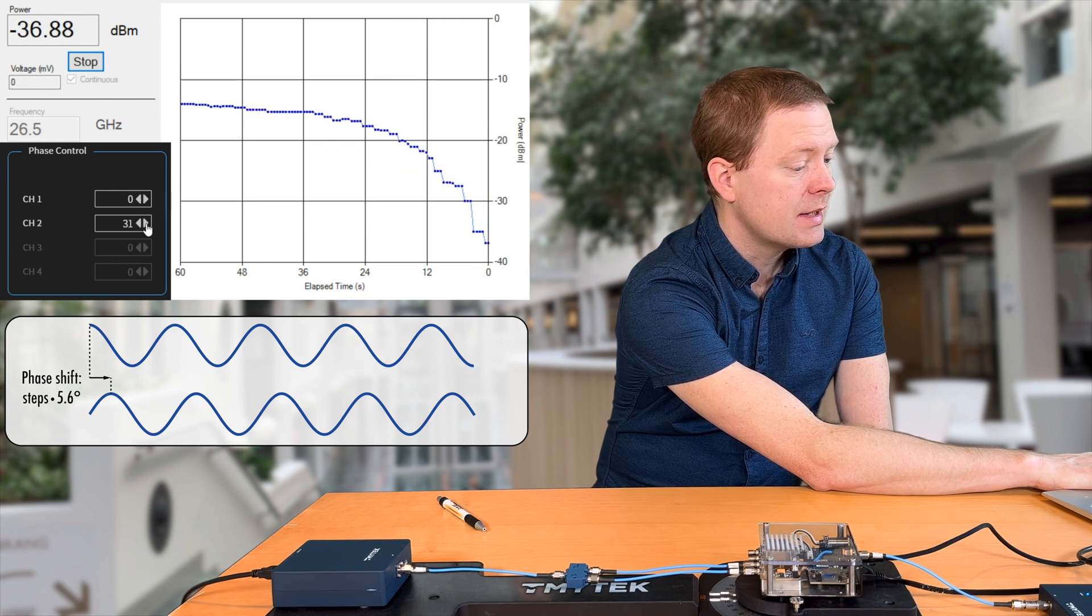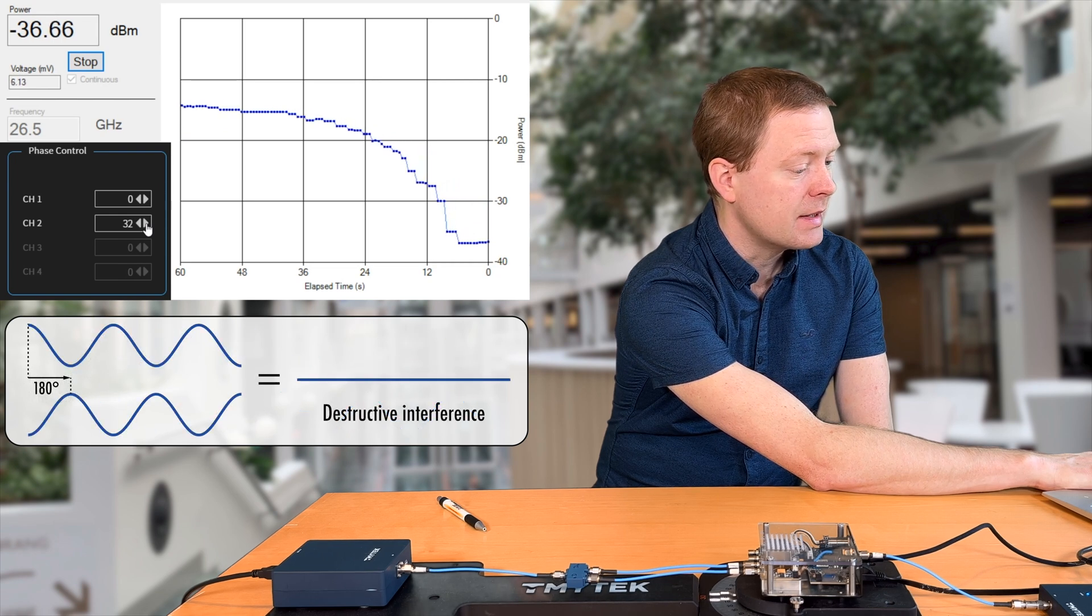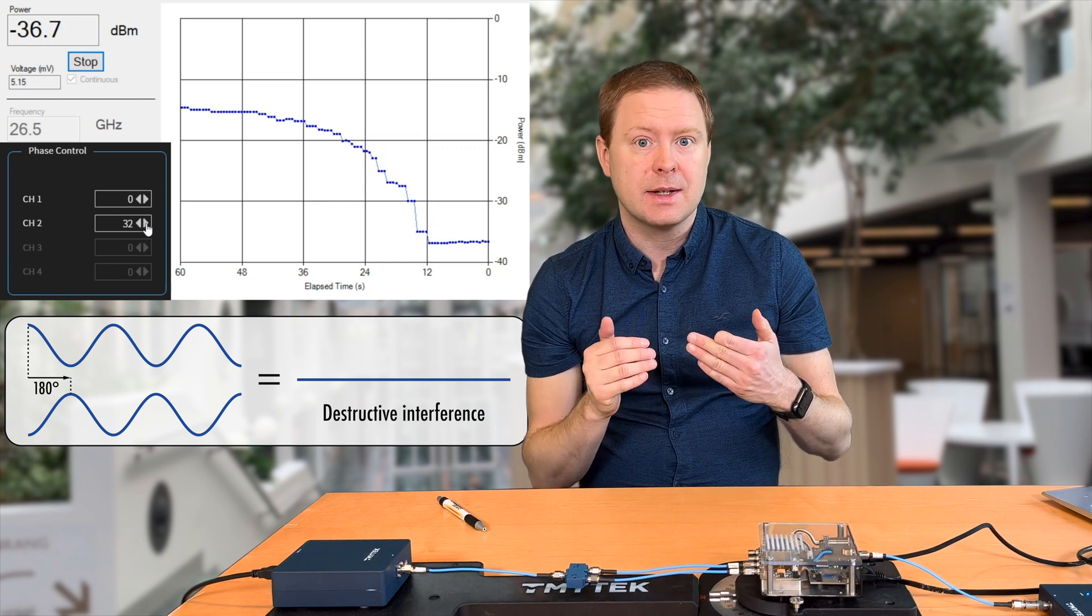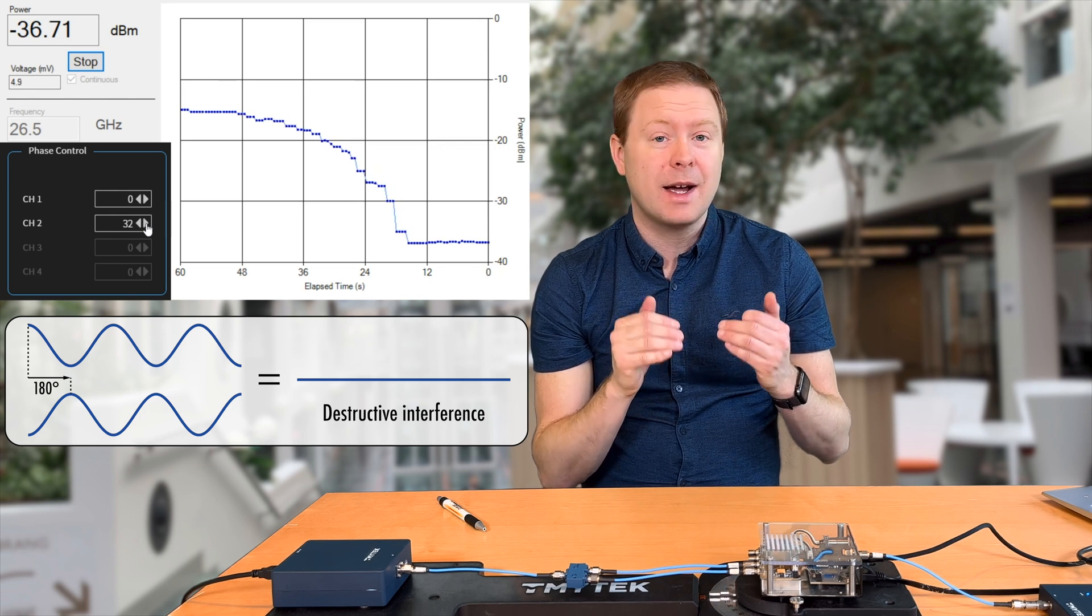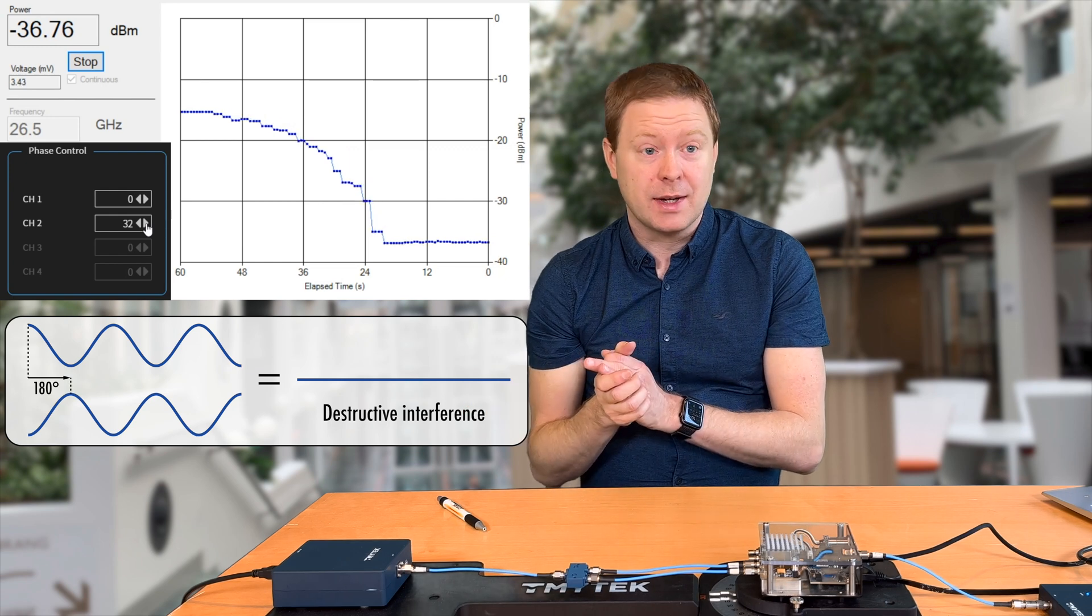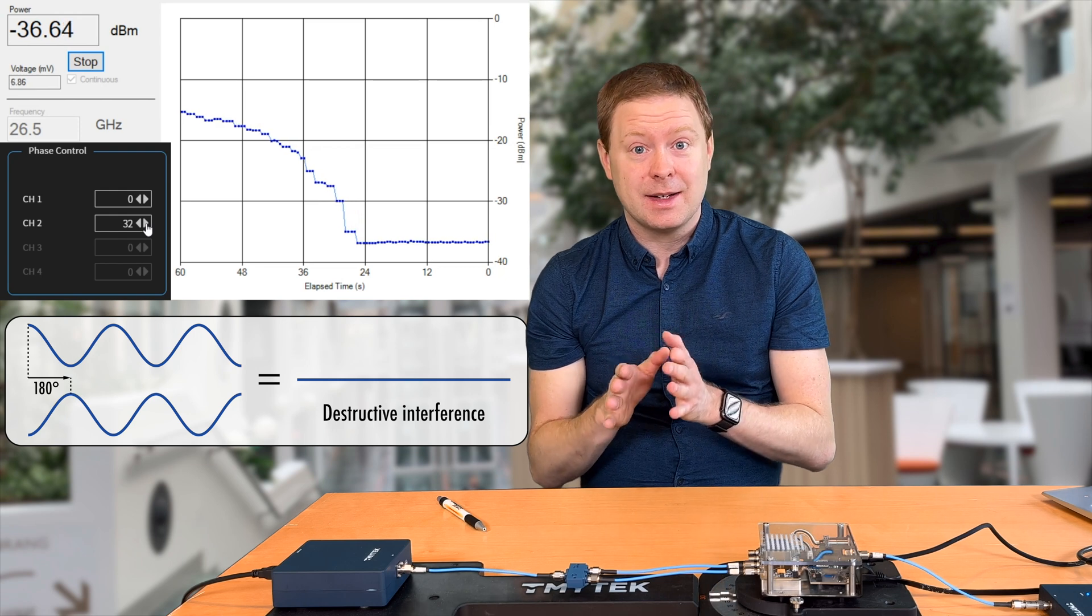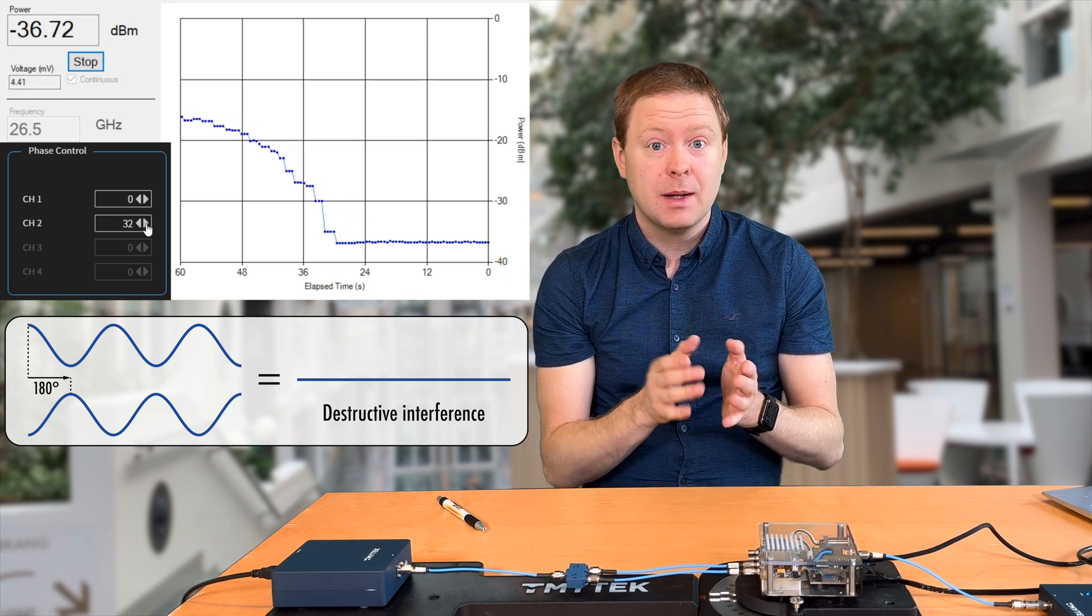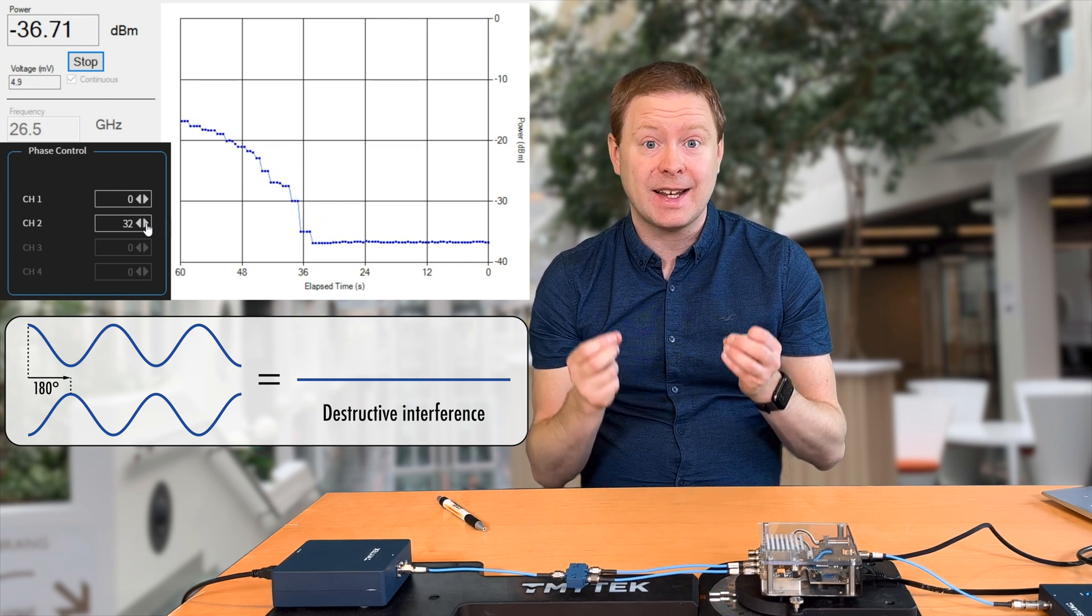Which with our 64 states should be around 31, 32. So this is what we can see now. Now the two signals are having opposite phases. It's not exactly opposite, so we don't go all the way down to zero. But actually the sensitivity that this power detector has is minus 36.88. So we are really down at the noise floor here. The signals are very weak. But you would need to have infinite resolution of phase shifters in order to cancel something exactly.